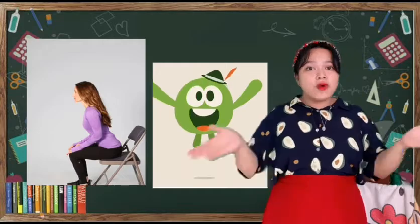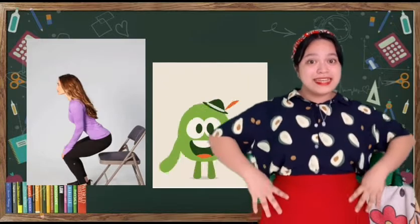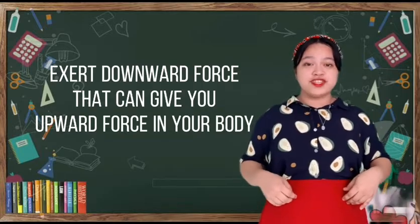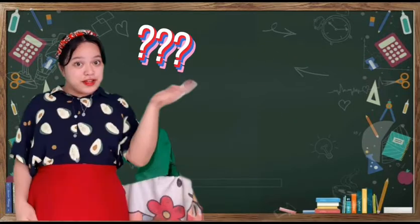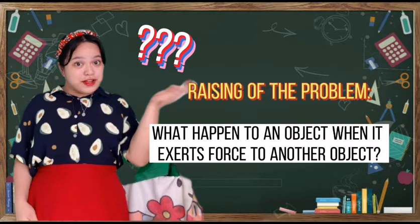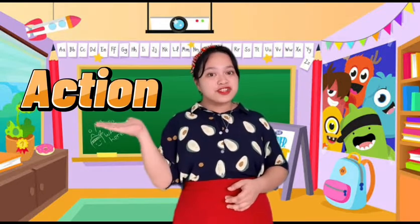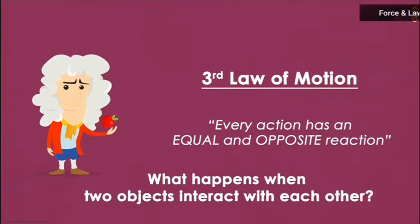Also, by standing up and jumping, what is the connection to swimming? By doing standing and jumping, you exert a downward force that will give you an upward force on your body. If that's so, what would you like to find out? What happens to an object when it exerts force to another object? I'll use a short video for you to understand more about Newton's third law of motion and how the action and reaction happens.